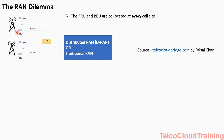Whether it is Node B, BTS, eNode B, gNode B — anything — the BBU is the software part and the RRU is the hardware part. You have antennas here. In a traditional RAN, both RRU and BBU are co-located at every cell site, and the BBU further connects to the core node via a backhaul interface. The interface between RRU and BBU is called CPRI.